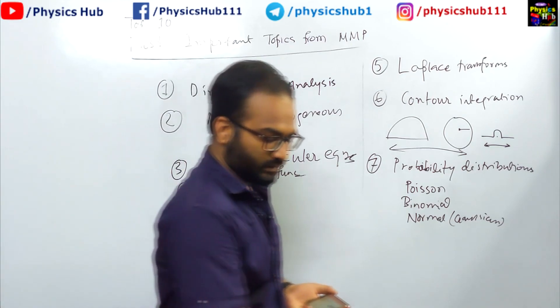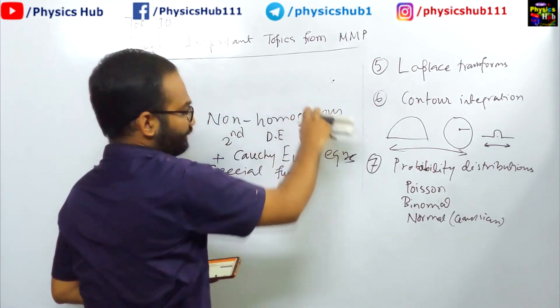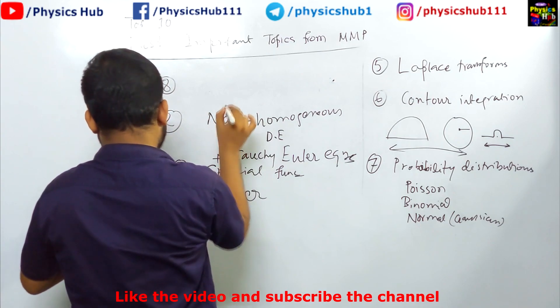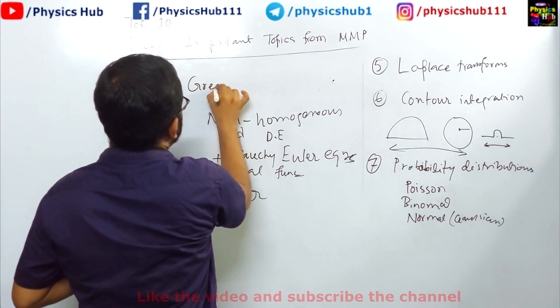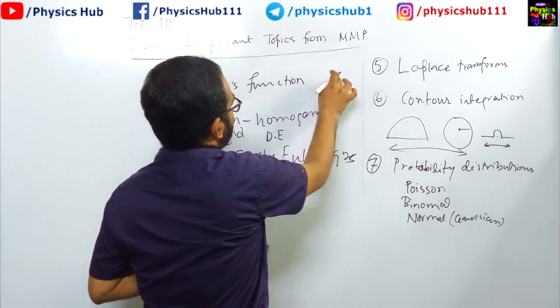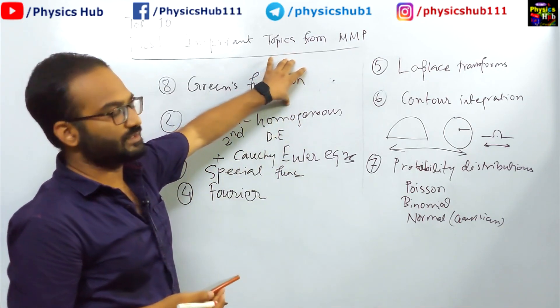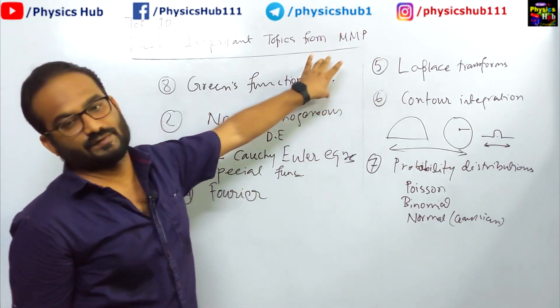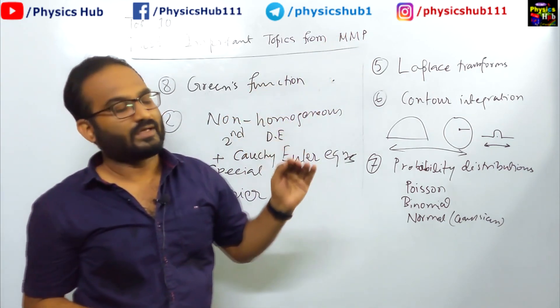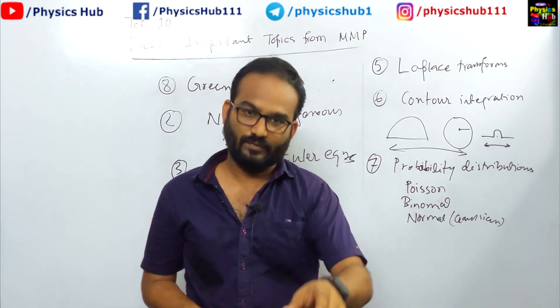Next, the eighth topic is Green's function. And this topic can give you five marks question. You must learn to solve the Green's function. Let me tell you, if you have understood this Green's function systematically, then this topic is very easy and very scoring. Actually, sometimes by just using the properties of Green's function, you can solve a problem.